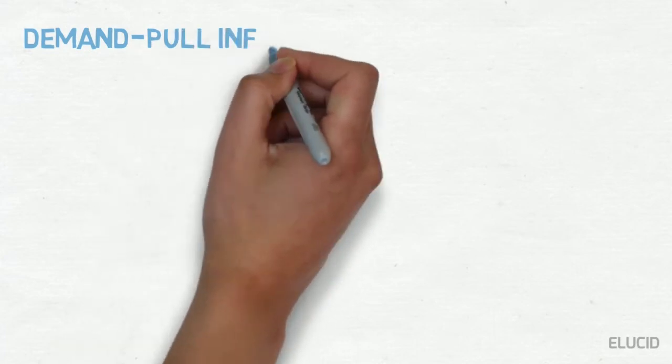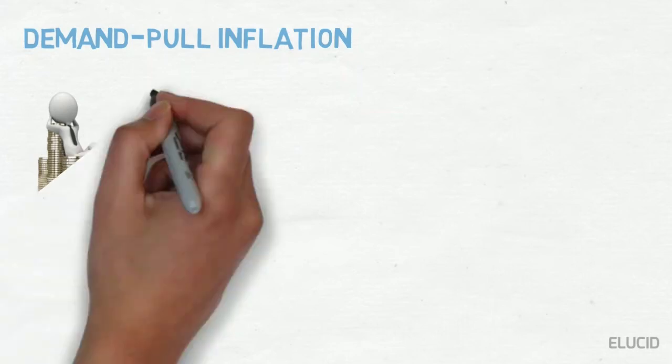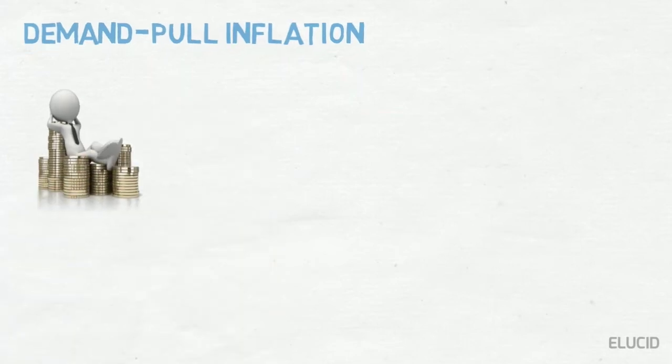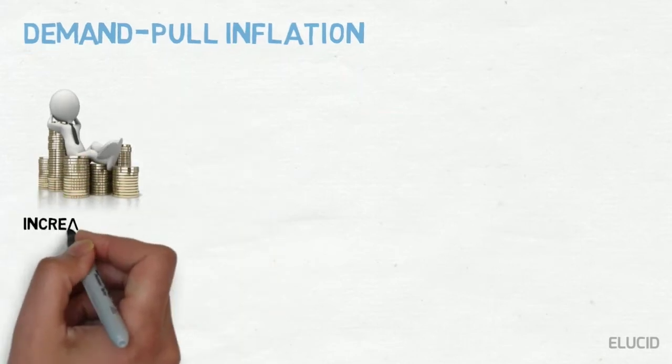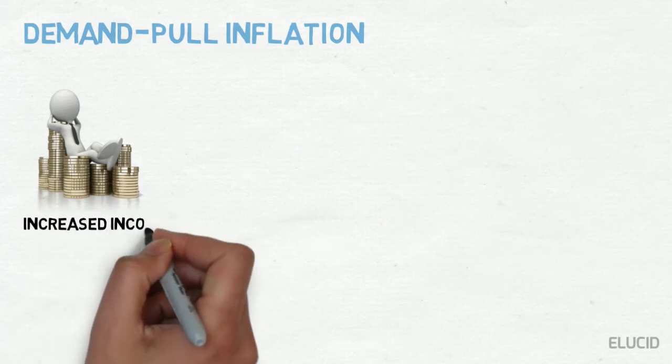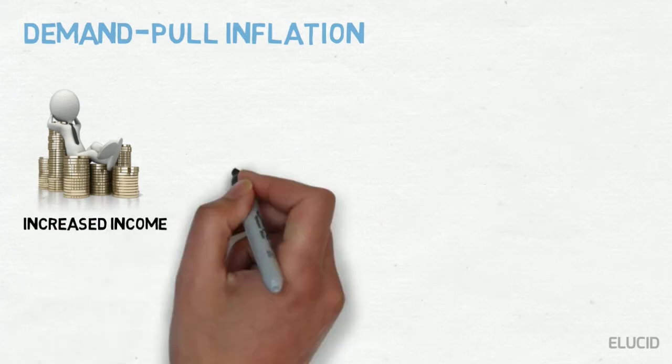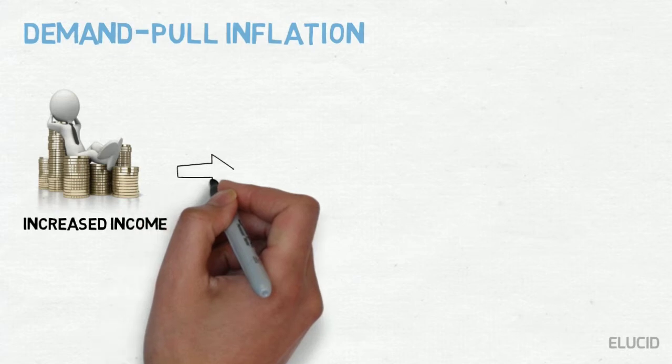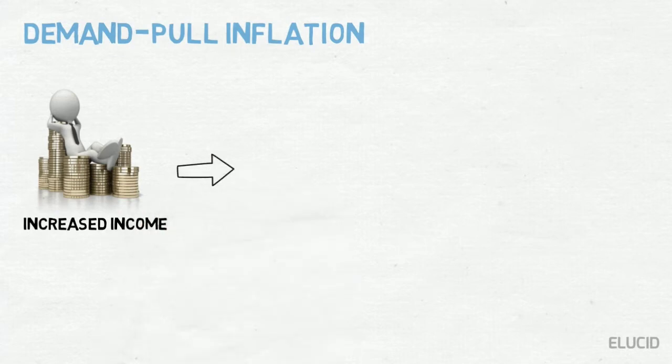Demand-pull inflation. An increase in aggregate demand over the available output leads to a rise in the price level. Such inflation is called demand-pull inflation.